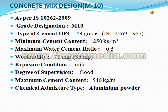Concrete Mix Design: Grade M10 as per IS 10262-2000. Type of Cement: OPC 43 Grade. Minimum Cement Content: 250 kg/m³. Maximum Water Cement Ratio: 0.5. Workability: 75 mm. Exposed Condition: Mild. Degree of Supervision: Good. Maximum Cement Content: 540 kg/m³. Chemical Admixture Type: Aluminium Powder.